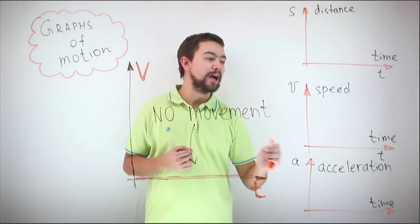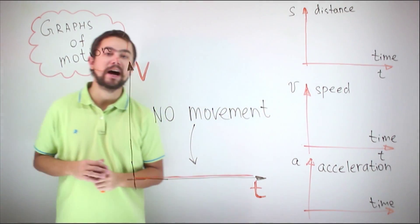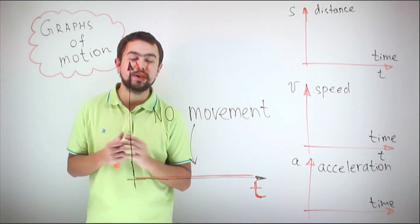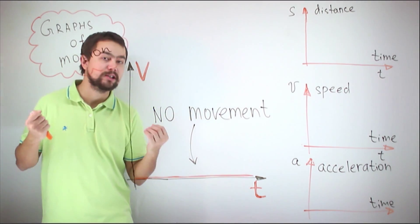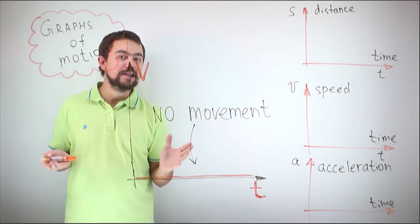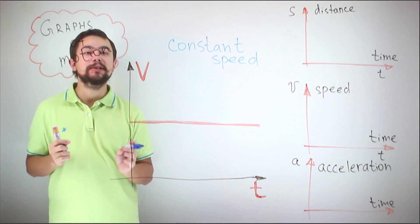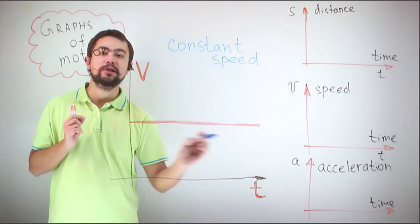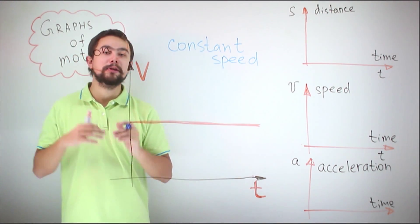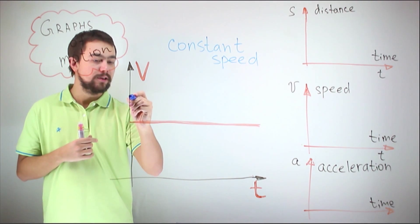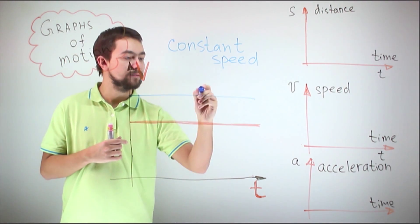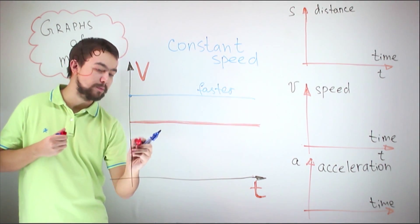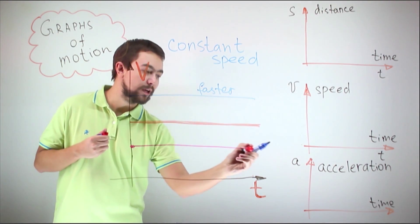Now we move to the second type of graph: the speed-time graph. If the speed is zero and remains zero through time, this means the body is not moving — this is a graph of a stationary body. This is a graph for a body moving with constant speed; we can see the speed does not change through time. If the body is moving with a faster or slower constant speed, the graph would look like this.